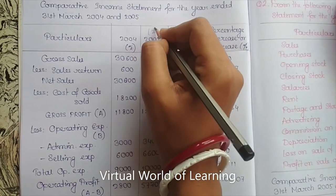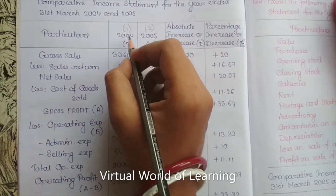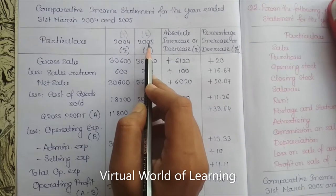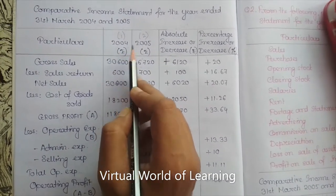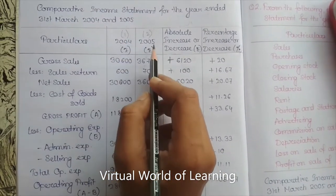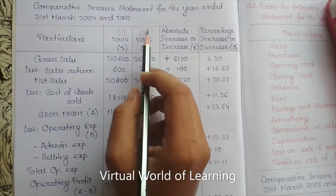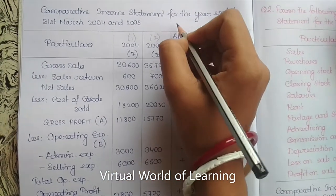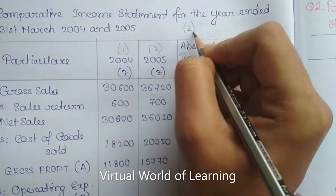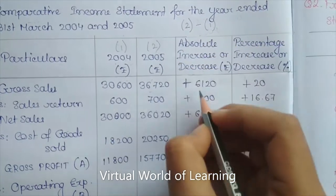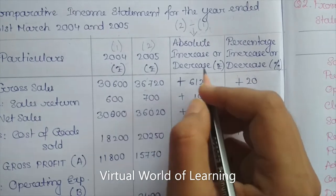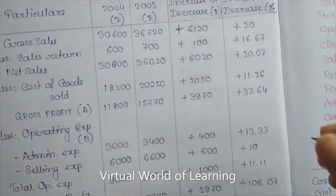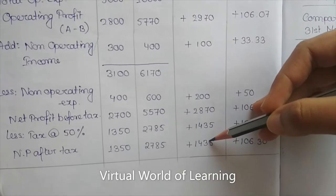In absolute increase or decrease, the formula is Year 2 minus Year 1. 2004 is the base year, so it is Year 1, and 2005 — for which we calculate the changes — is Year 2. Anything denoted as the base is Year 1, and the year for which we calculate changes is Year 2. So in absolute increase or decrease, we deduct Year 1 from Year 2. Whenever we write increase or decrease, we denote it by a plus or minus sign.